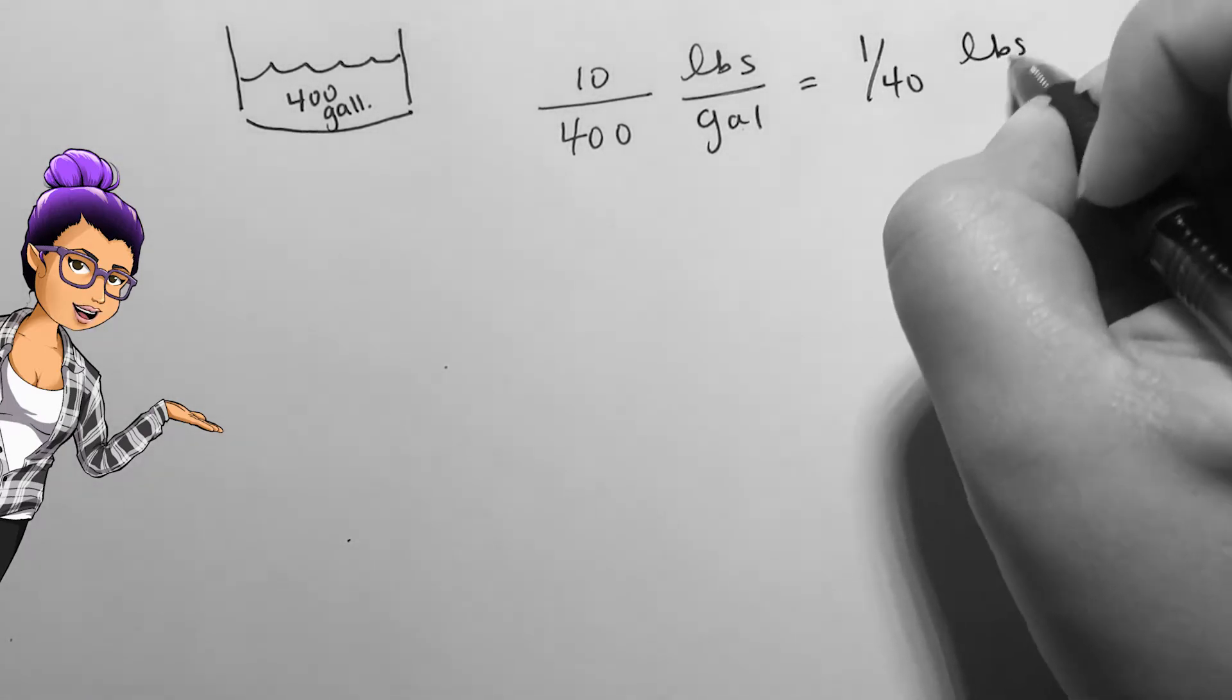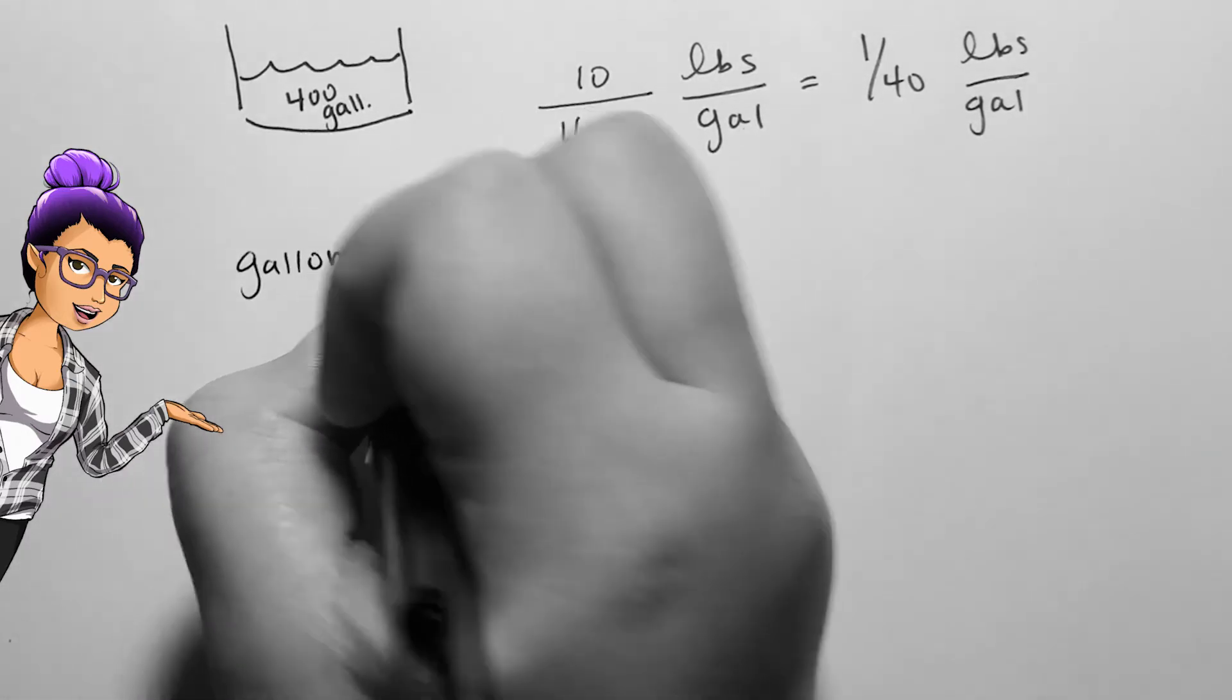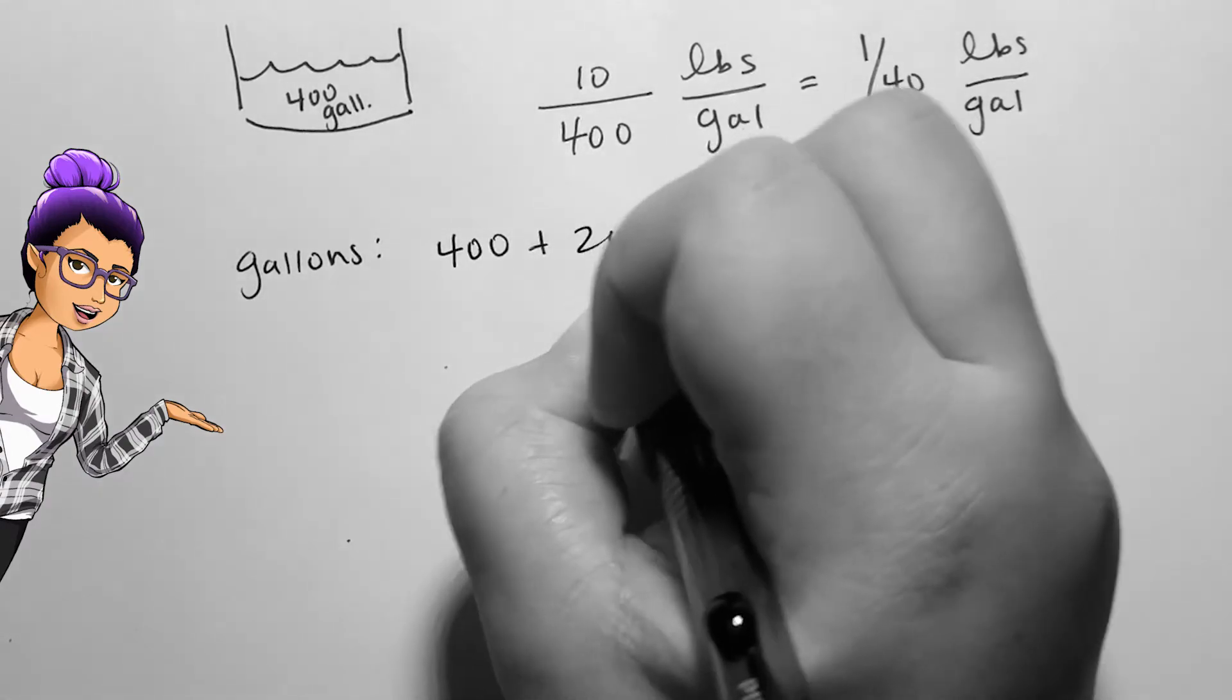Let's say a tap opens, pouring 20 gallons of water per minute into the tank. This means that I could represent gallons of water in the tank by 400 plus 20T, where T is minutes that have passed.